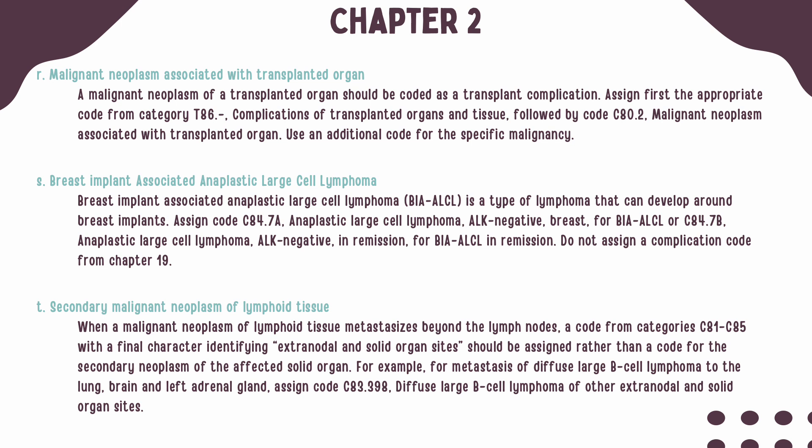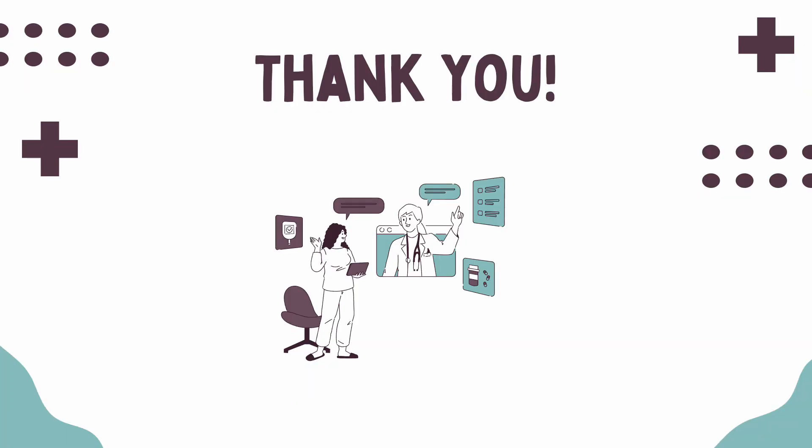When a malignant neoplasm of lymphoid tissue spreads beyond the lymph nodes, a code from category C81 through C85 should be assigned instead of a code for the secondary neoplasm. For example, if diffuse large B-cell lymphoma spreads to the lung, brain, or left adrenal gland, code C83.398 should be assigned. Thank you for supporting us and make sure to stay tuned for new videos in our ICD-10-CM guideline review series. Make sure to subscribe to our channel so that you can be informed of our newest videos as they are released.